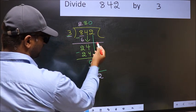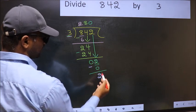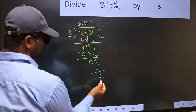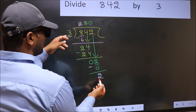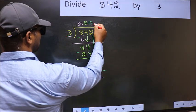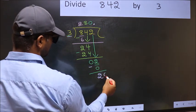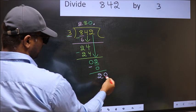Over here, we did not bring any number down. And 2 is smaller than 3. So now you can put a dot and take 0. So 20.